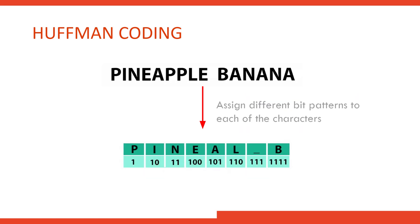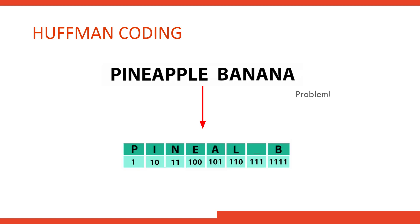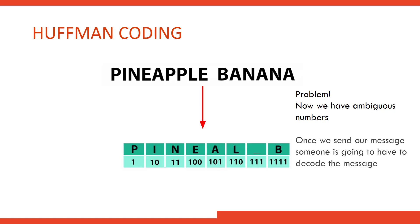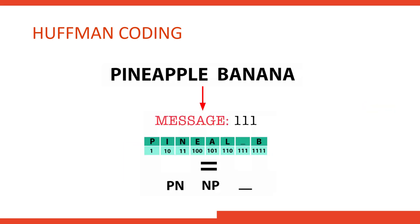We assign different bit patterns to each character — for example, 1 to P, 10 to I, 11 to N, and so on. But this leads to ambiguity: if I send you the message '111', does that mean P and N, or N and P, or something else entirely? Ambiguity means interpreting something in more than one way, and Huffman encoding solves this problem by using a binary tree.